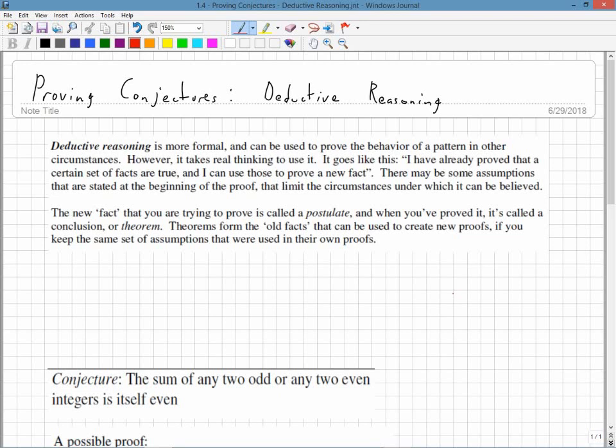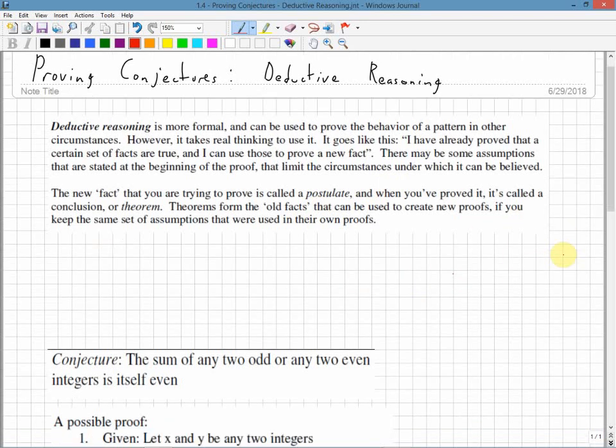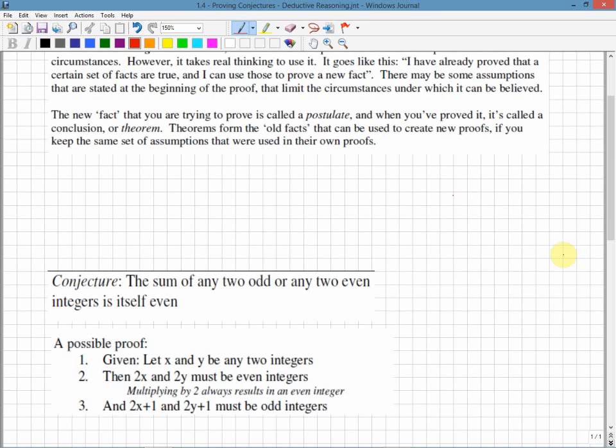The new fact that you're trying to prove is called a postulate. And when you've proven it, it is called a conclusion or a theorem. Theorems form the old facts that can be used to create new proofs if you keep the same set of assumptions that were used in their own proof. So you can build on theorems and keep proving new theorems.